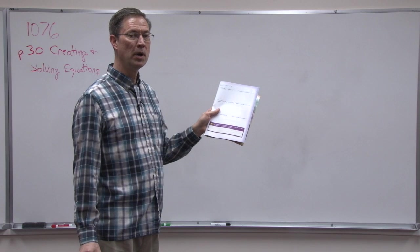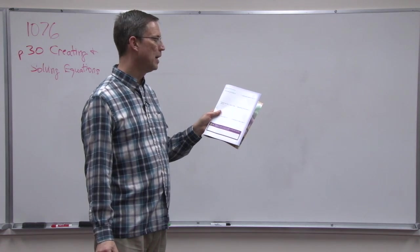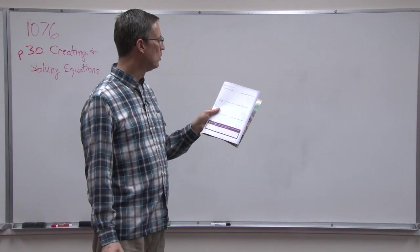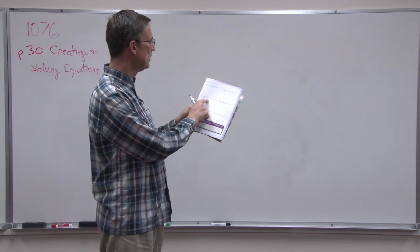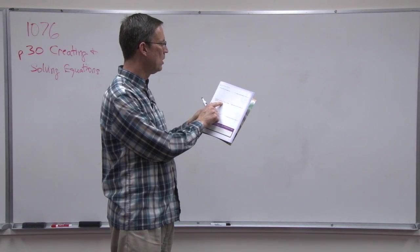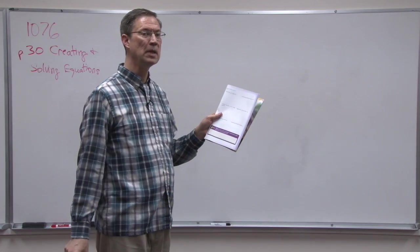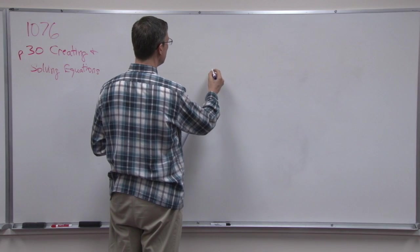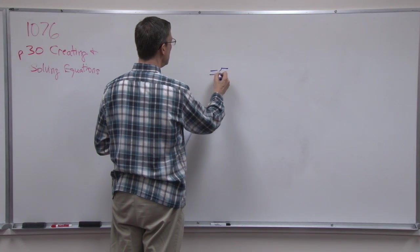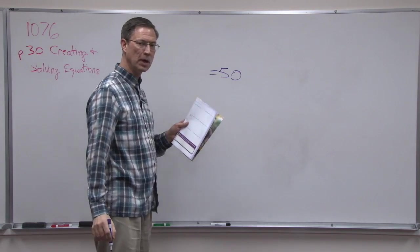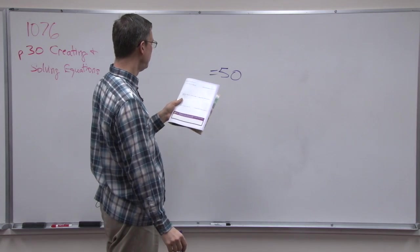It says 25 more than one-fifth times a number equals 50. Now, I always think it's easiest to start with whatever it says is equals and put that at the end. So equals 50.